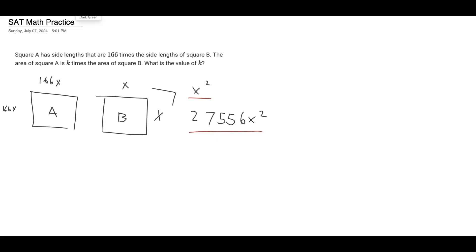Well, we can just plug in a random value for x. So let's say the side length of B was 1, right?